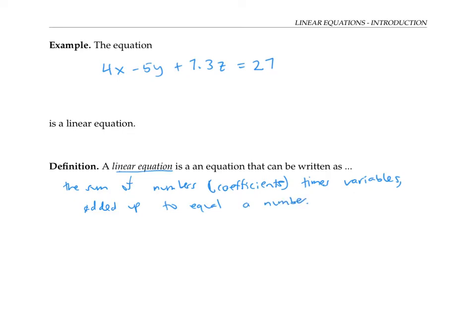So in this example above, the numbers 4, -5, and 7.3 are the coefficients. And letters x, y, and z are the variables. And the products of coefficients times variables get added up to equal another number.